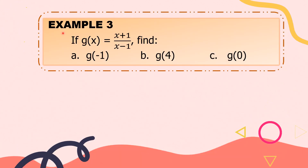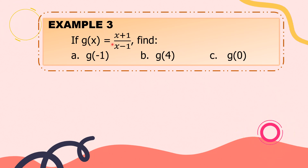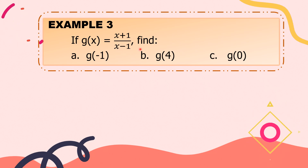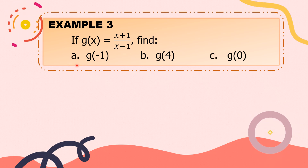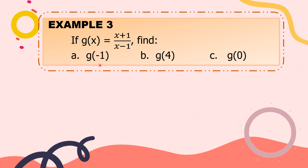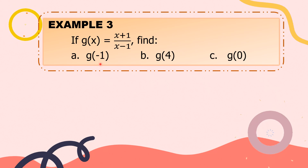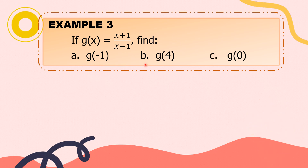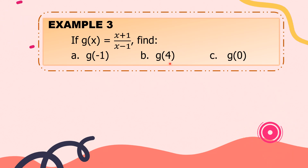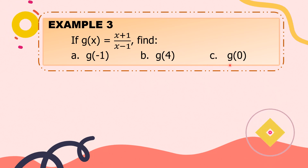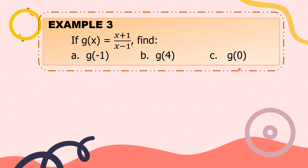Now, let's have example number 3. If g of x is equal to x plus 1 over x minus 1, find: a) g of negative 1, where the value of x is negative 1; b) g of positive 4, where the value of x is positive 4; and c) g of 0, where the value of x is 0.